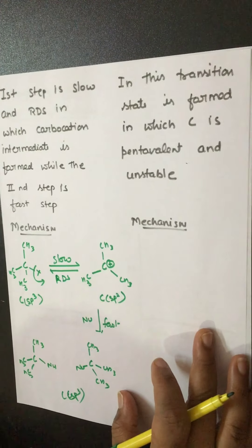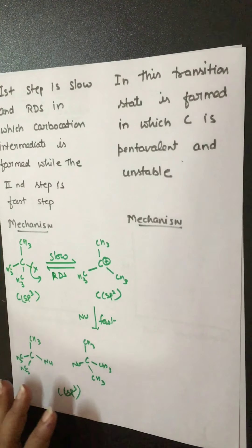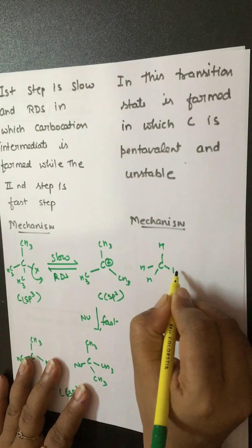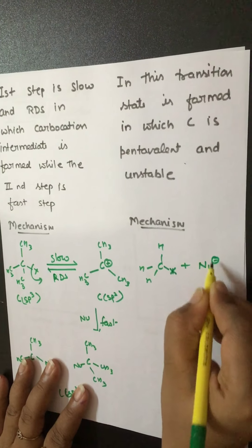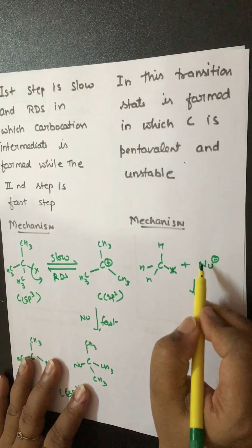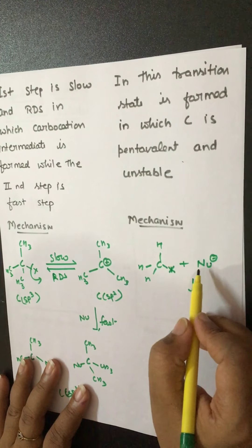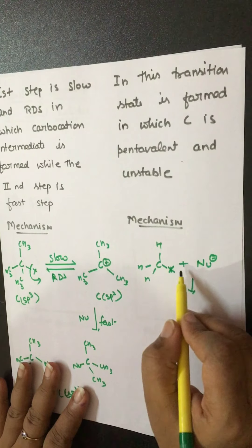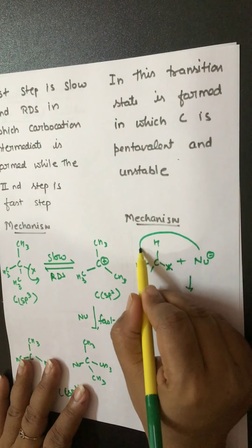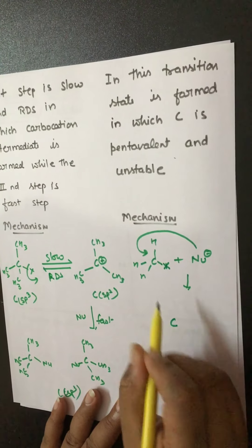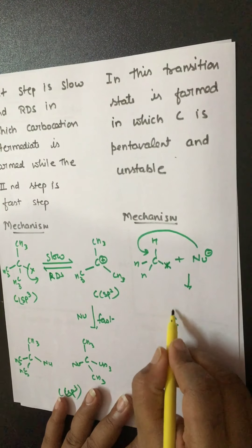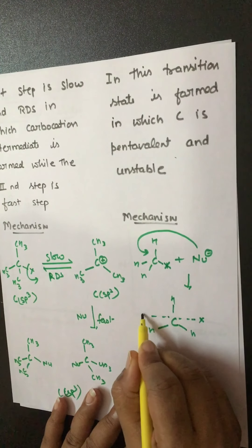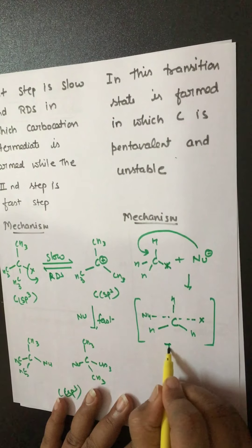Now SN2 type of mechanism. In SN2, the rate depends on both substrate and nucleophile. The nucleophile can only attack from the back side. Why? Because both the nucleophile and the halide are negatively charged, so due to electron–electron repulsion, the nucleophile attacks from the back side. Upon backside attack, this bond will break and a new bond will form, and the valency of carbon becomes 5. This condition is known as the transition state.